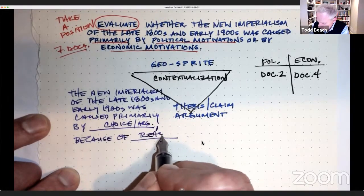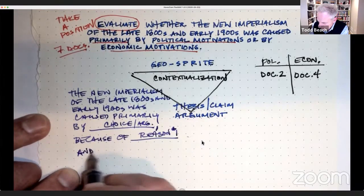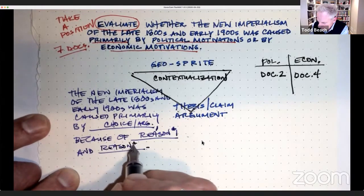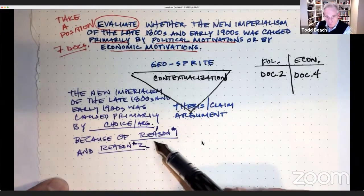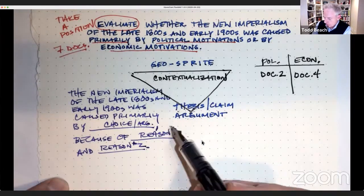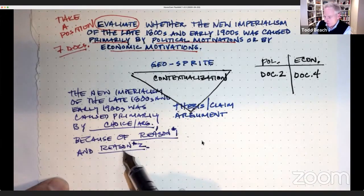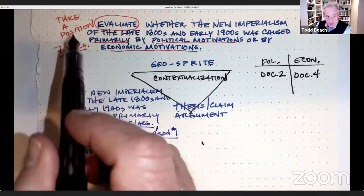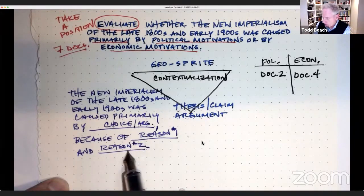Are you going to say political motivations or economic motivations? Then you're going to use a comma and you're going to say because, and you're going to give two reasons. Reason number one and reason number two. Because that will help you set up your next two body paragraphs. And it will help you determine, after I've read the documents, one of the reasons is this and one of the reasons is this. Then you're going to be able to use the documents to support that reasoning. We've taken a position with our choice and our argument, and we've established our line of reasoning.